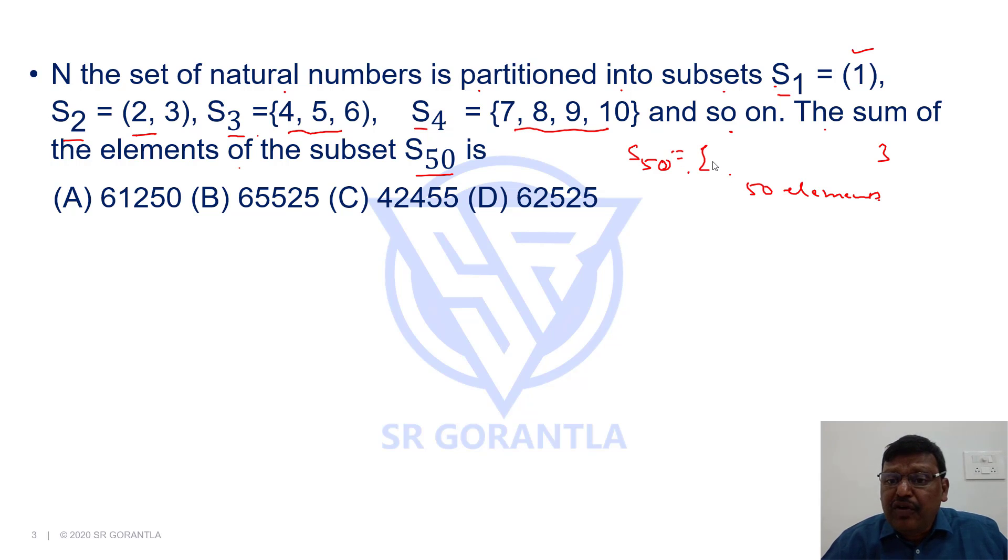But then, what these 50 elements will be? What it starts with? If you look at S1 has the first natural number, S2 has the next two natural numbers, S3 has the next three natural numbers, S4 has the following four natural numbers, S5 will have the next five natural numbers.